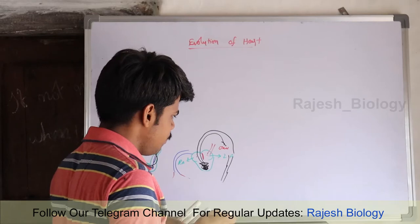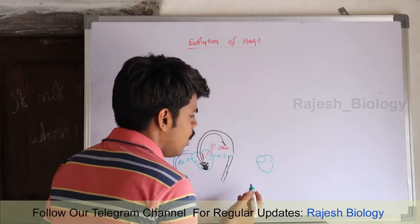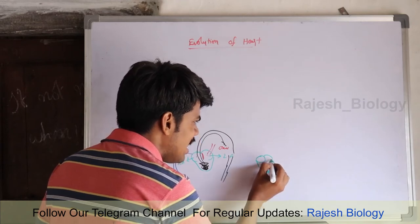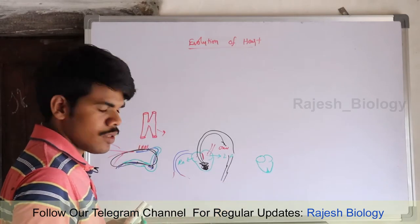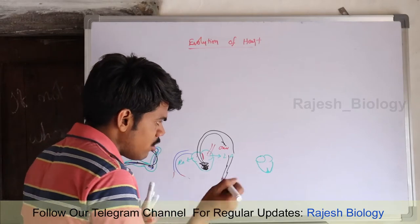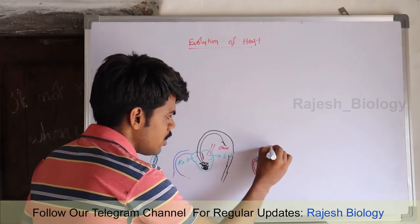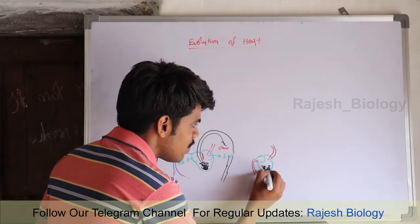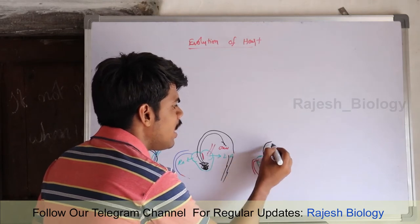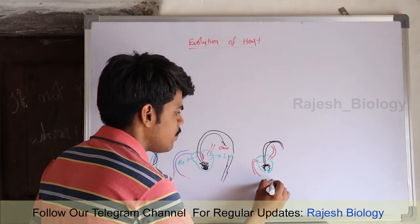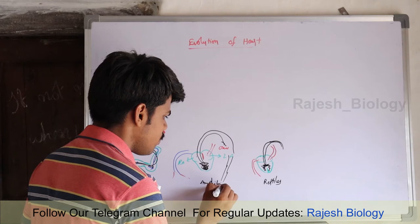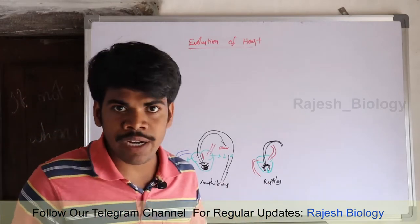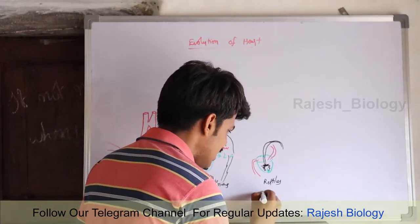In reptiles, the ventricles also develop a septum, but the septum is incomplete — forming an incompletely divided four-chambered heart. The heart receives blood from different body parts and from lungs, but both are mixed in the ventricle due to the incomplete septum, so mixed blood is still sent to different body parts. All reptiles have an incompletely divided four-chambered heart, except the crocodile.